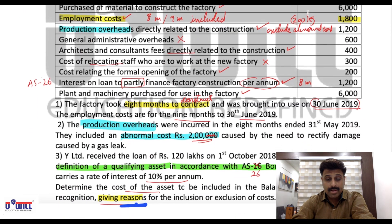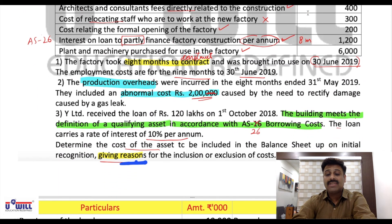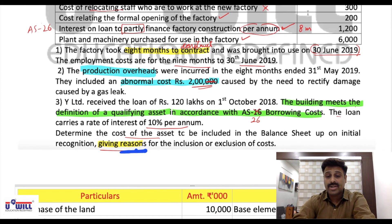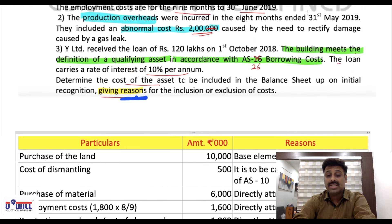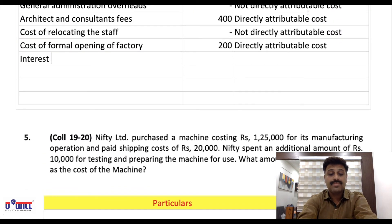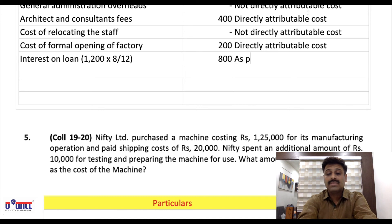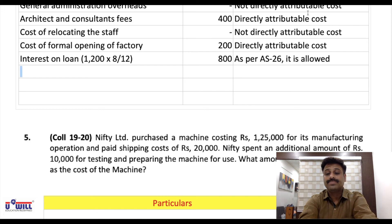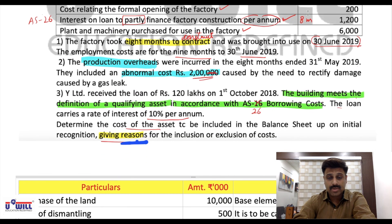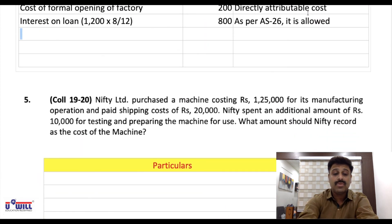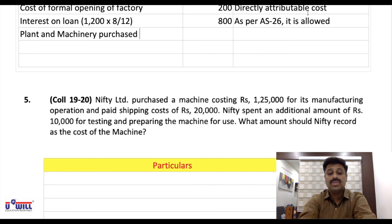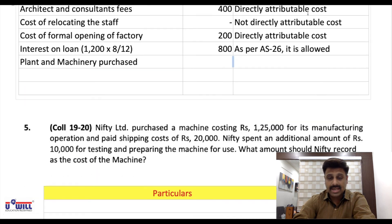Interest on loan: as per AS 26, borrowing cost during construction is to be included, but only 8 months since it is per annum. Calculation: 1,200 × 8/12 = 800. Reason: allowed as per AS 26, included in accordance with AS 26. Plant and machinery purchased for use in the factory: 6,000 — included. Reason: directly attributable cost.